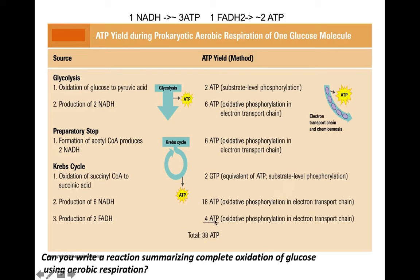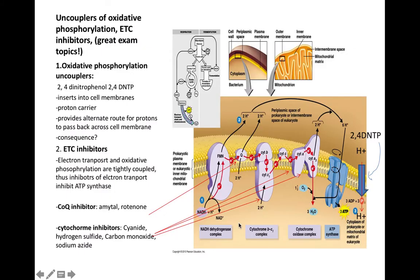The hypothetical maximum is 38 ATP per glucose. Understanding oxidative phosphorylation is helped by considering uncouplers. The classic oxidative phosphorylation uncoupler is 2,4-dinitrophenol (2,4-DNP), which inserts into cell membranes and provides an alternate route for protons to cross the membrane, bypassing ATP synthase.